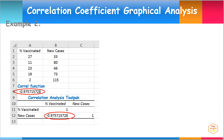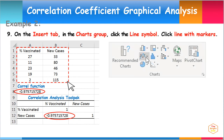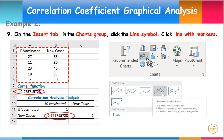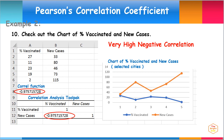We can also verify our conclusion through graphical analysis by using an Excel chart. First, select the cell range from A1 to B6. Then, on the Insert tab, in the Charts group, click the line symbol. Then click Line with Markers. Here is the chart of percent vaccinated and new cases. Notice from the line graph that as the percent vaccinated increases, new cases of viral infection decreases. Also, when the percent vaccinated decreases, new cases of viral infection increases. This verifies our conclusion of a very strong negative correlation between percent residents vaccinated and new cases of viral infection.